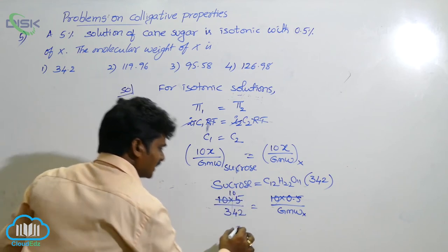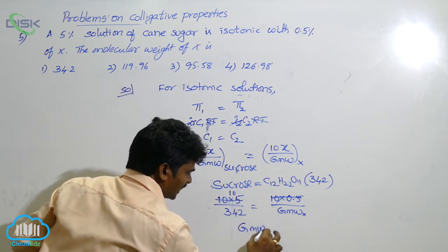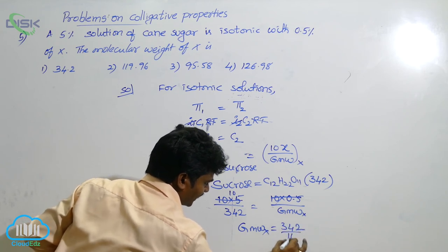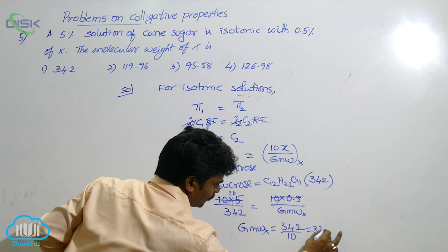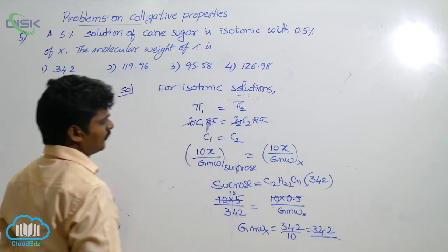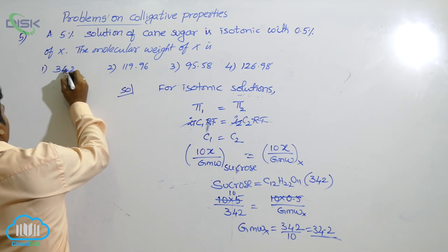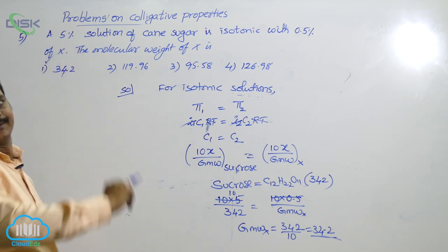Then gram molecular weight of substance X is equal to 342 by 10. That means 34.2. So, where is it? 34.2 is in first option. So, answer is first option.